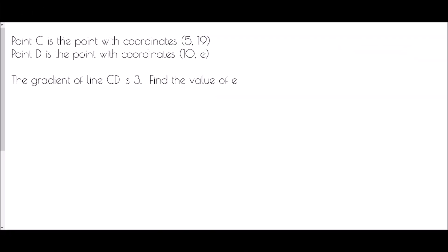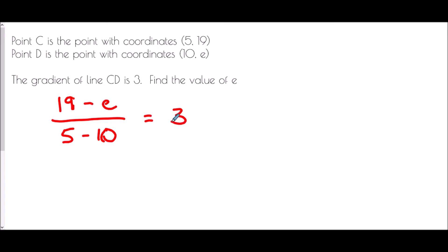Same situation again. Point C is (5, 19), point D is (10, E), and the gradient of line CD is 3. Find the value of E. Because we know the gradient: (y1 minus y2) over (x1 minus x2) equals 3, so (19 minus E) over (5 minus 10) equals 3. 5 minus 10 is negative 5, so (19 minus E) over -5 equals 3.